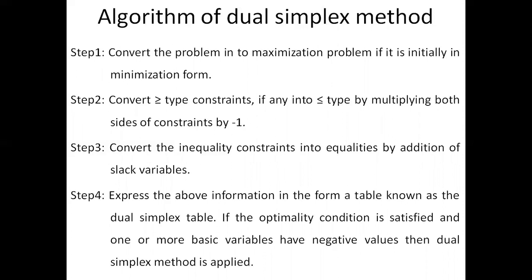In step 2, convert greater than or equal type constraints, if any, into less than or equal type by multiplying minus 1 on both sides of the constraint. In step 3, convert the inequality constraints into equal type by addition of slack variables.